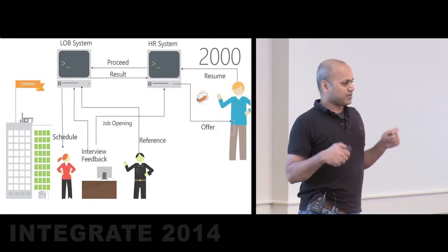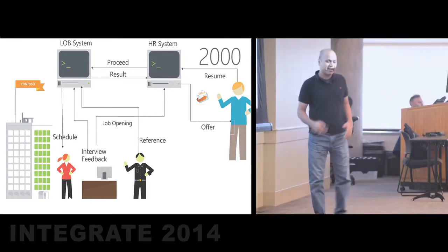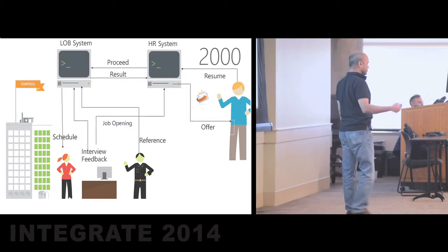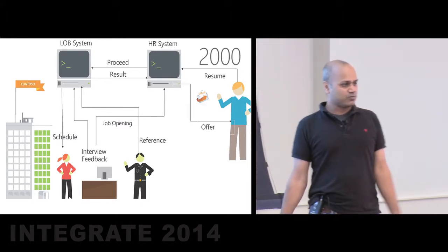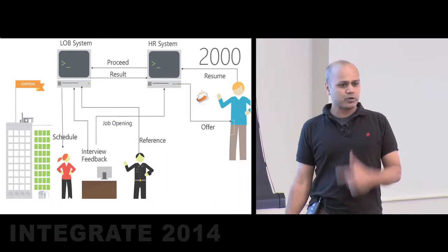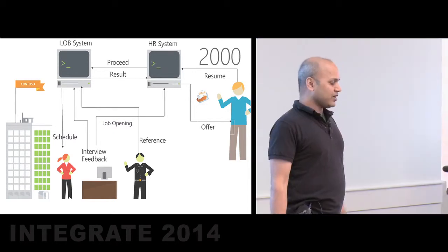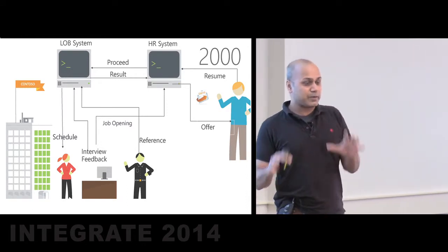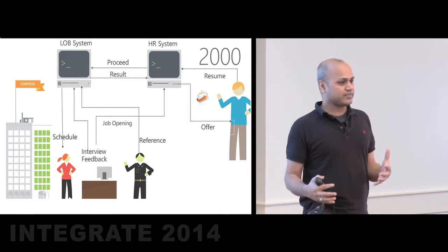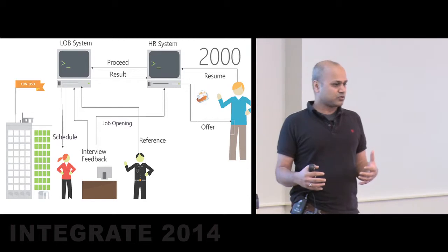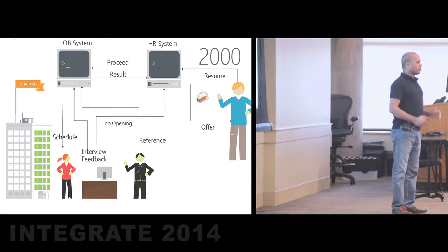At certain periodicity, a matching algorithm would run, figure out the right fit, and move the requirement into an interdepartmental LOB system to schedule an interview. The LOB system loops in the right people, feedback is given, references are collected, and then it moves back to the HR system to make an offer. Key points: the BPM system here is essentially orchestrating activities around a small number of enterprise systems. The systems don't change very often — neither does the business process. It could go five or ten years without any changes. If you change a business system, you almost rewrite your business process.